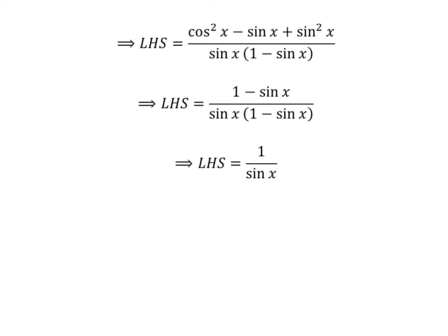Cancelling out the common factor 1 minus sine of x in the numerator and denominator gives us the left hand side equal to 1 upon sine of x. We know that 1 upon sine of x is equal to cosecant of x.